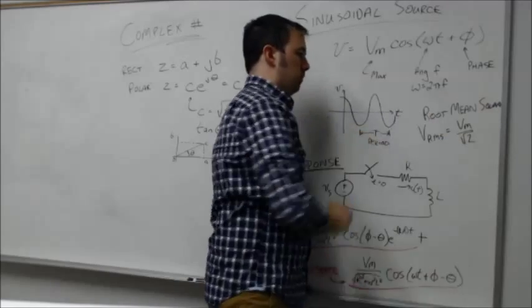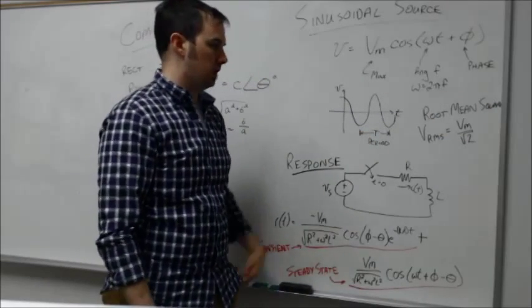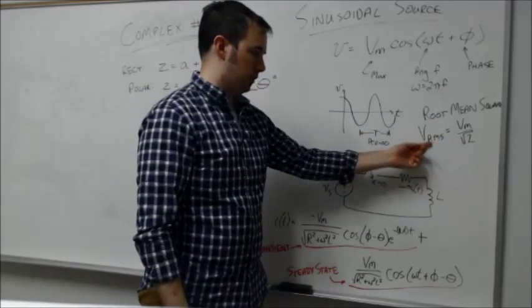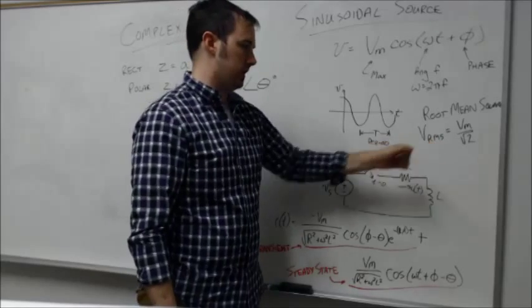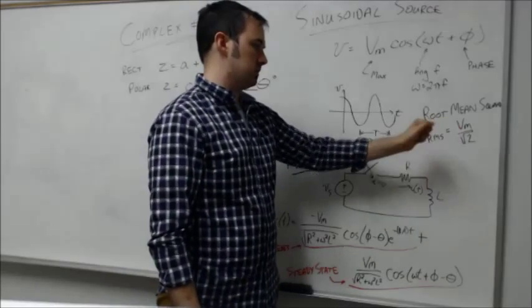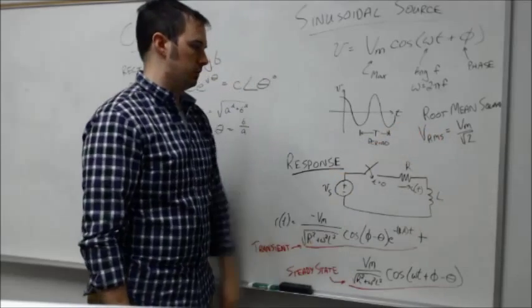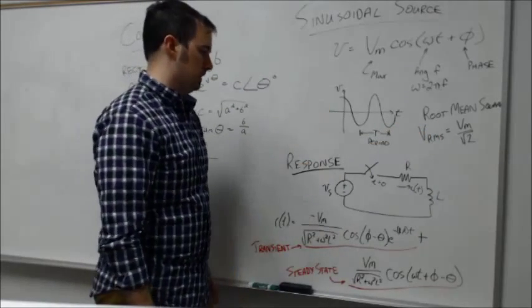Another term we pointed out was the root mean square, denoted as RMS. V sub RMS is simply going to be the maximum amplitude divided by the square root of two. That will come in handy in doing further analyses down the road.